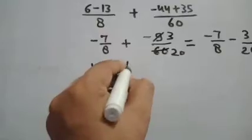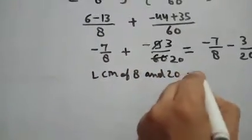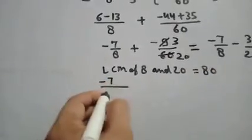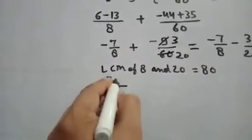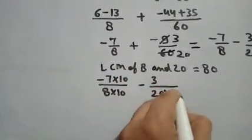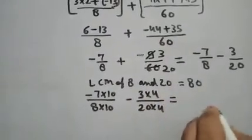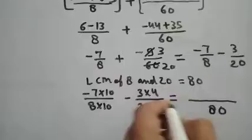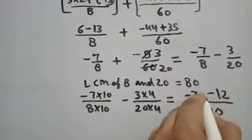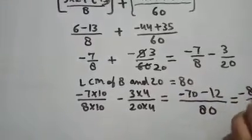This becomes minus 7/8 plus minus 3/20. Now the LCM of 8 and 20 is 80. Minus 7/8 times 10 minus 3/20 times 4.